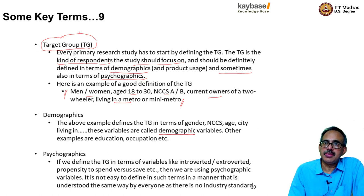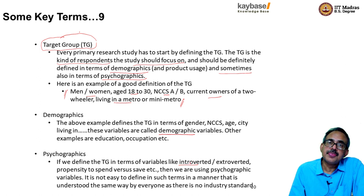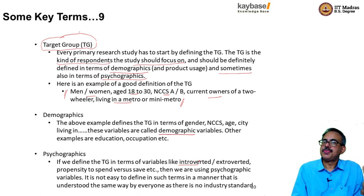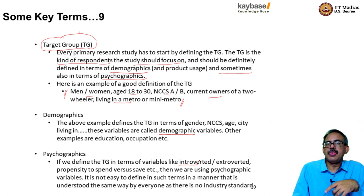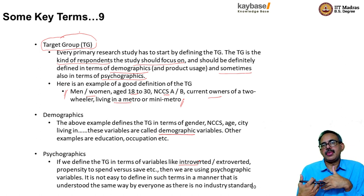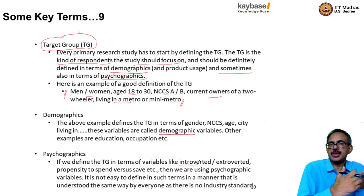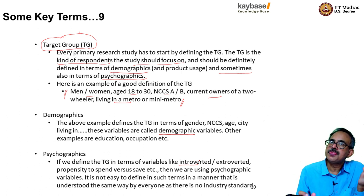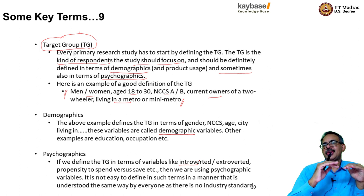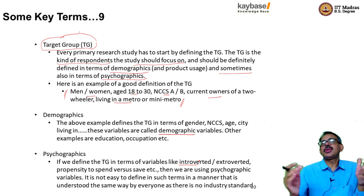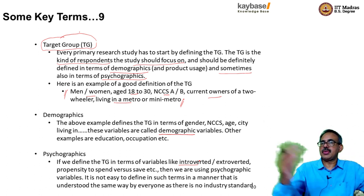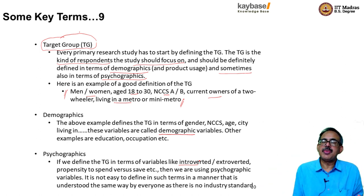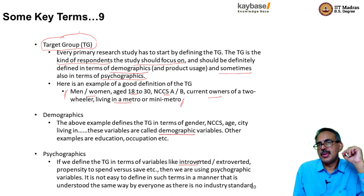Psychographics defines the target group by personality traits: for example, introverted versus extroverted people, those with a propensity to spend versus save, those who want to be in tune with the latest trends versus those who are old-fashioned, or emotionally reactive versus rationally reactive respondents. Psychographics is a valid way to define a target group, but unlike SEC or demographics — which have commonly accepted definitions across the country — there is no universally agreed definition for traits like 'extroversion.' That makes psychographics more difficult to operationalize in ground-level primary research.